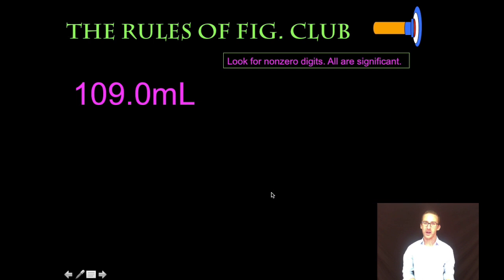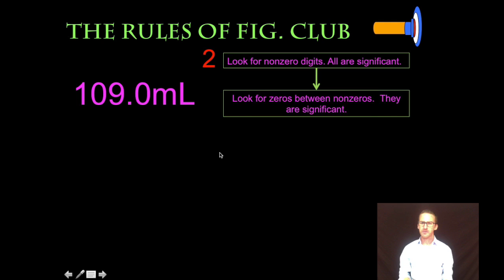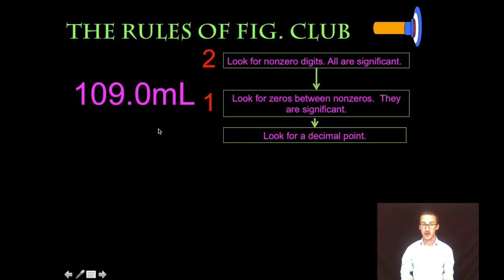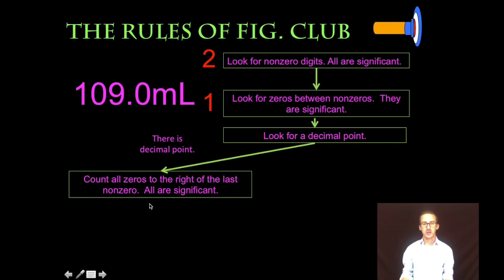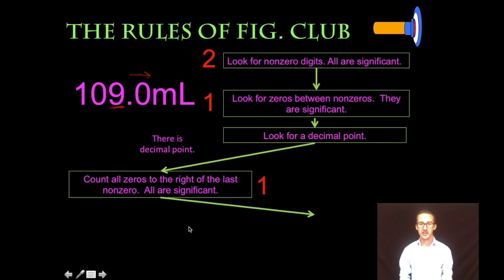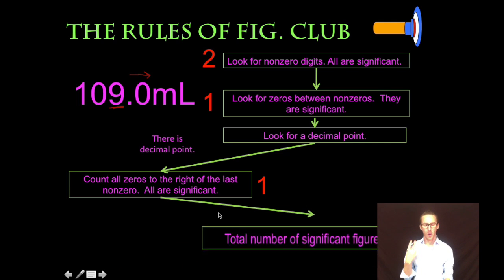Last example: 109.0 milliliters. Rule number one: look for non-zero digits — the 1 and the 9 give us two significant digits so far. Rule number two: look for zeros between non-zeros — we count the zero between the 1 and the 9, indicating it has been measured with certainty. Rule number three: look for a decimal point — we've got one. Rule four: count all zeros to the right of the last non-zero. The 9 is the last non-zero, so we count the zero after the decimal point. Our total number of significant figures in this example is four.